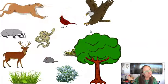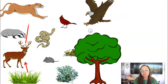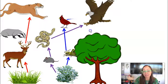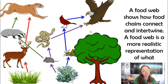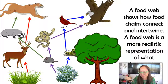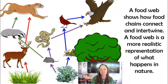More realistically though, in an ecosystem, you're going to have multiple food chains all intertwined together, and this represents a food web. A food web is a more realistic depiction of what actually happens in nature, showing multiple food chains and how energy flows through this ecosystem.